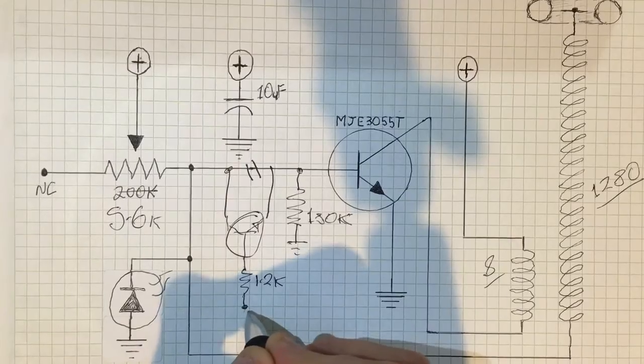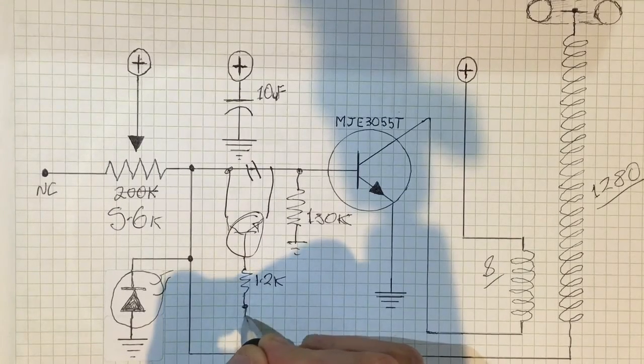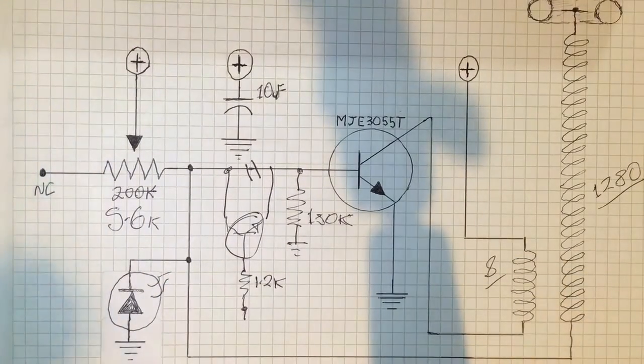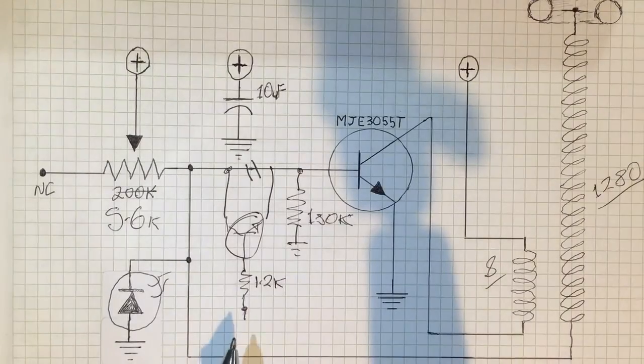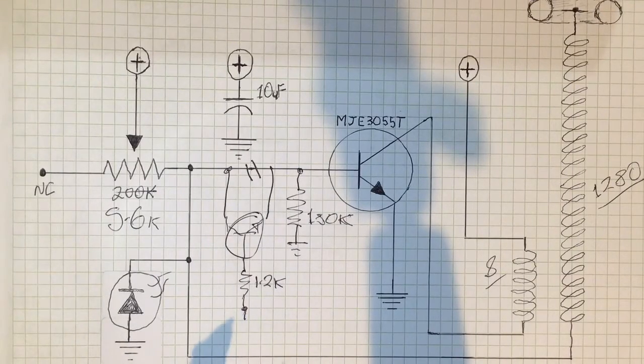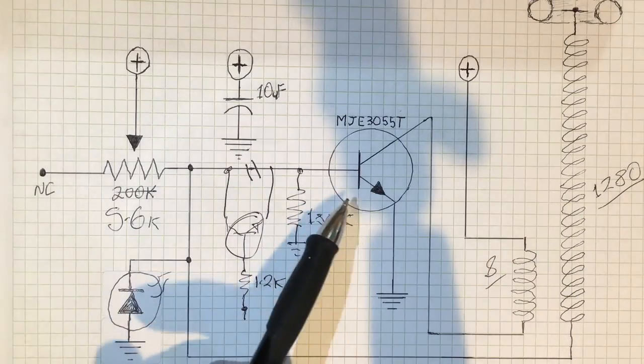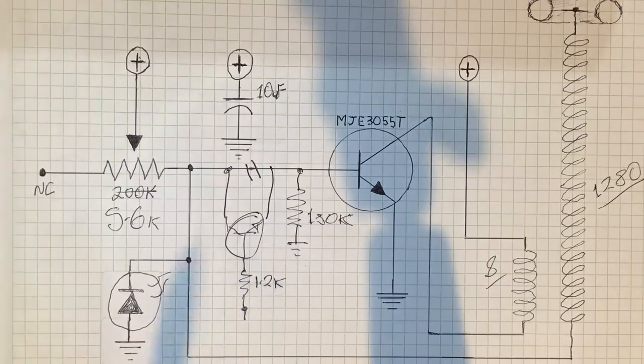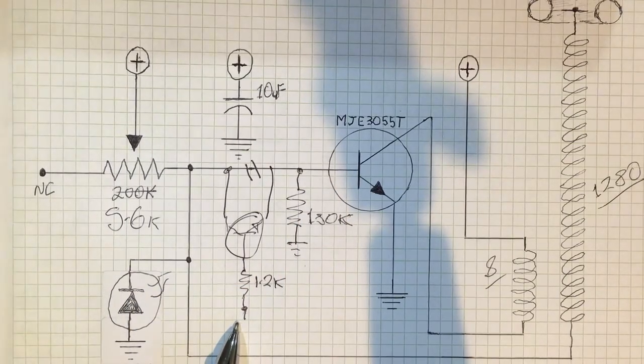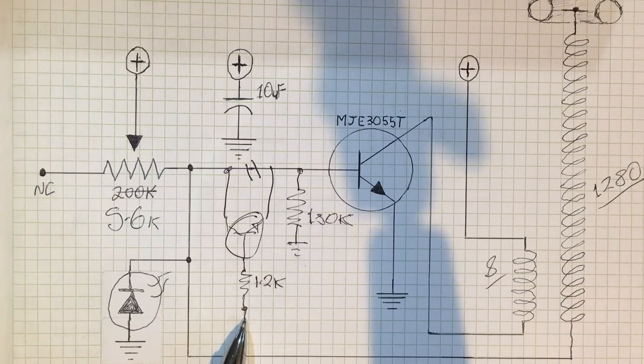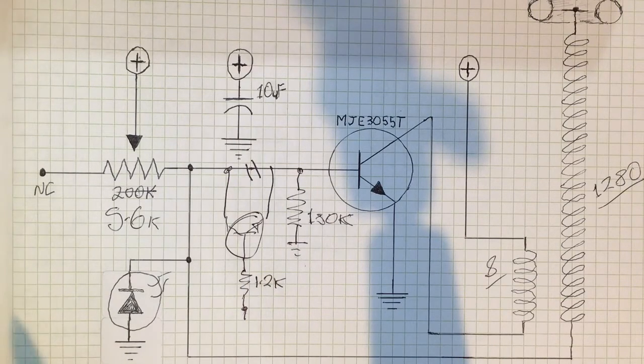And at the moment this line is floating the base of it. So, now at the moment when I turn it on, nothing will happen, because the base will be pulled low by this. This floats, it might turn high, it might not, but in my experience so far, it's just been low all the time.